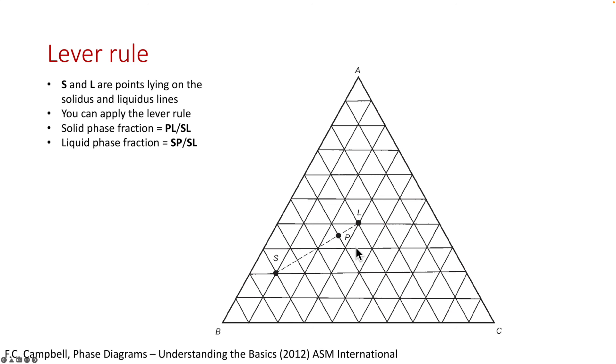If I want to know the weight fraction of the solid phase, I go to the other end of the lever using LP divided by SLS. Similarly, if I'm interested in the weight fraction of the liquid phase, I again go to the other side of the lever using SP divided by SL.